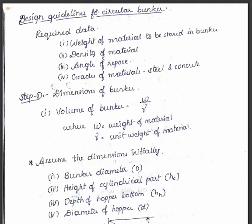Let us now check the design guidelines for circular bunker. Initially we require some preliminary data: first, the weight of the material to be stored in the bunker; second, the density of the material; angle of repose; and the grade of the materials we are using, that is steel and concrete.